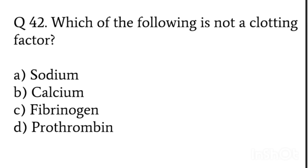Which of the following is NOT a clotting factor? Options: sodium, calcium, fibrinogen, prothrombin. If you recall the clotting mechanism cascade — calcium plays an important role, fibrinogen plays an important role, prothrombin also plays an important role. So what is the odd one out? Sodium.